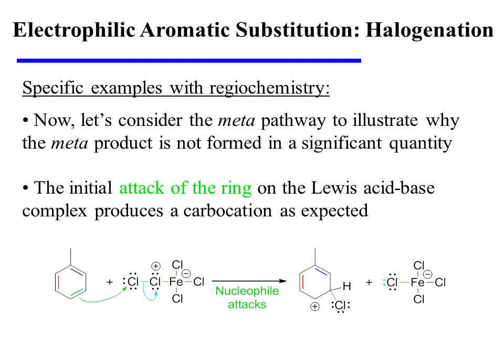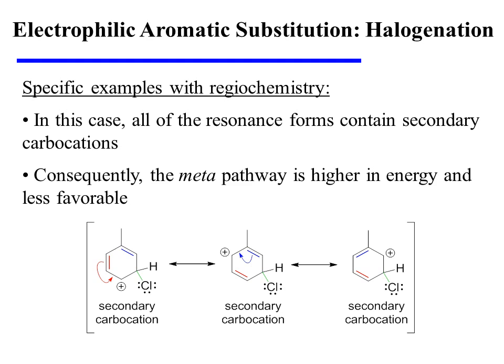The production of the para-product proceeds through an analogous mechanism. Now let's consider the meta pathway to illustrate why the meta product is not formed in significant quantities. The initial attack could produce a sigma complex with chlorine meta to toluene's methyl group. However, in this case, all of the resonance forms of the sigma complex contain only secondary carbocations — unlike the ortho-para pathway, which had a more stable tertiary carbocation contributor. Consequently, the meta pathway has a higher-energy sigma complex and is therefore a less favorable pathway.